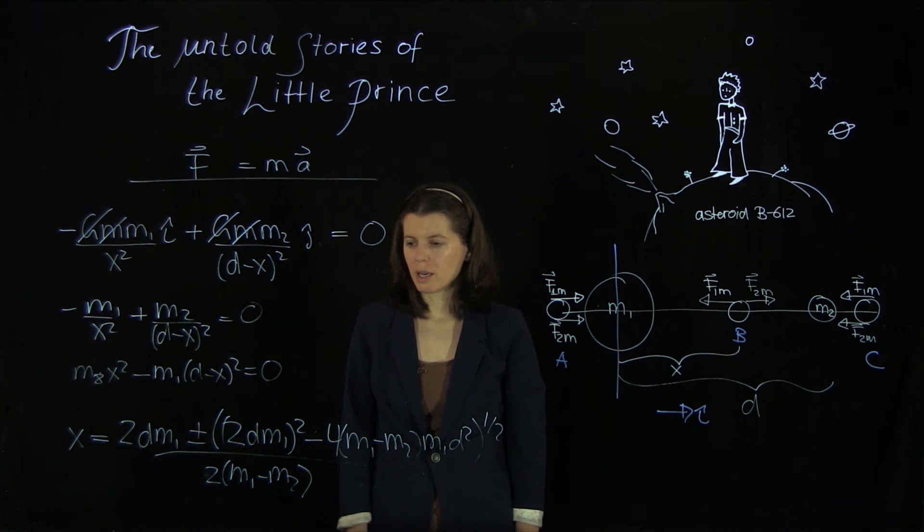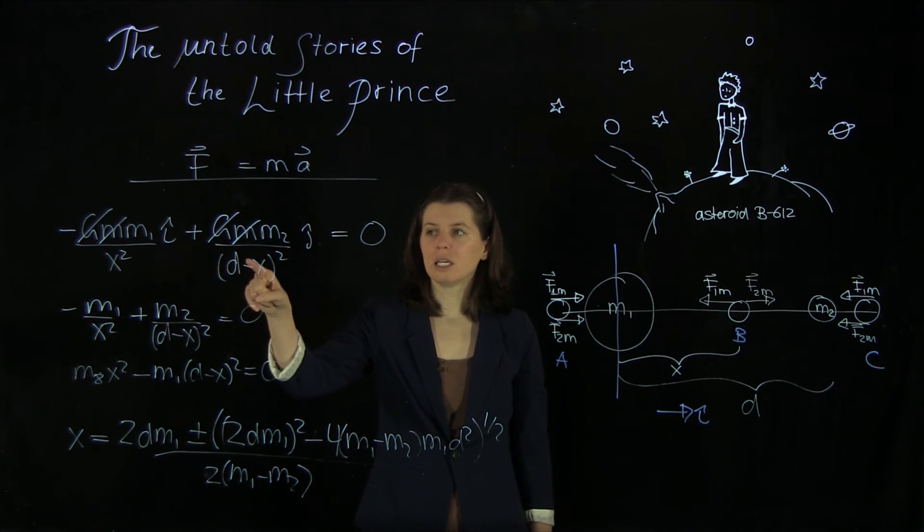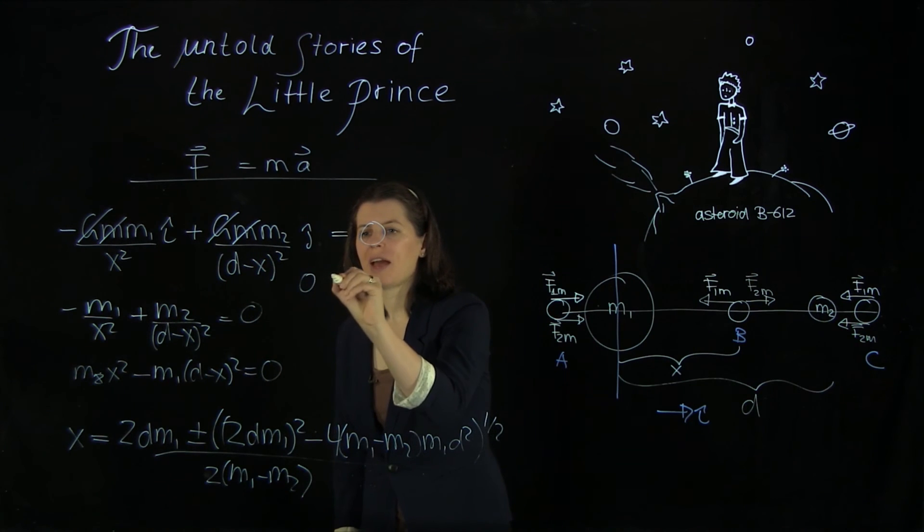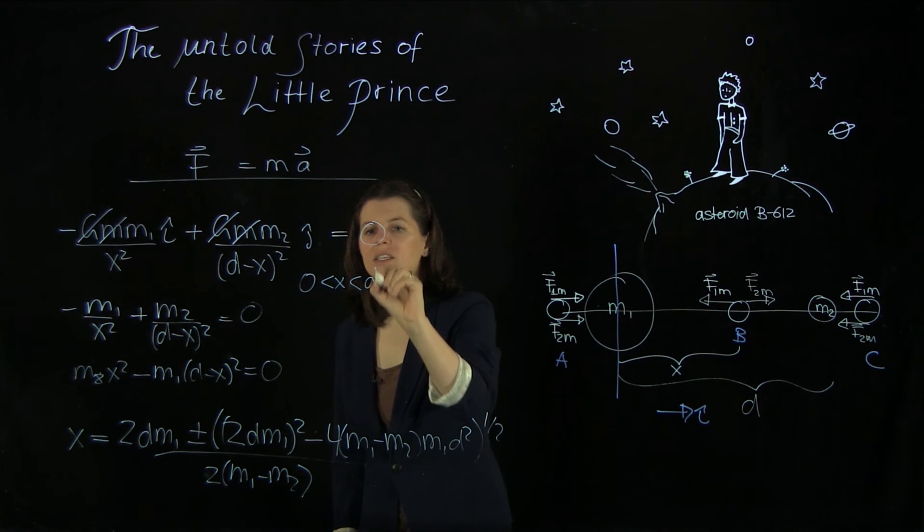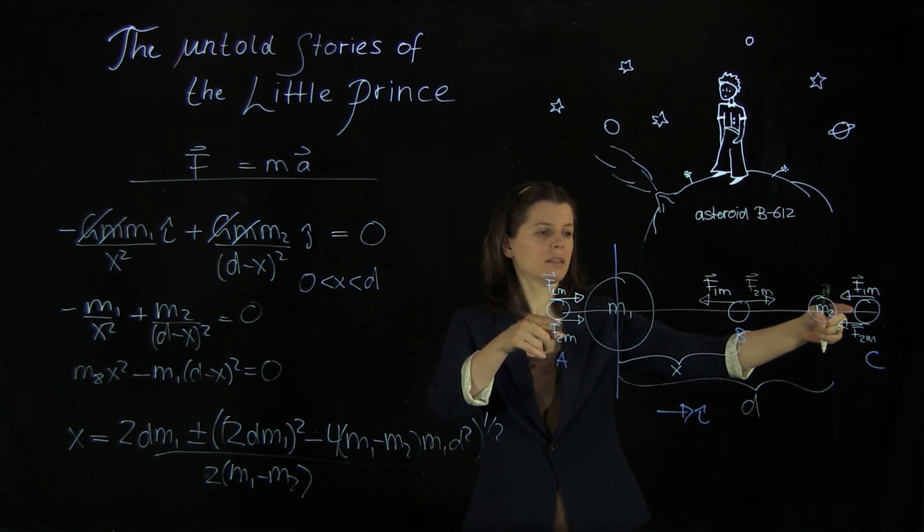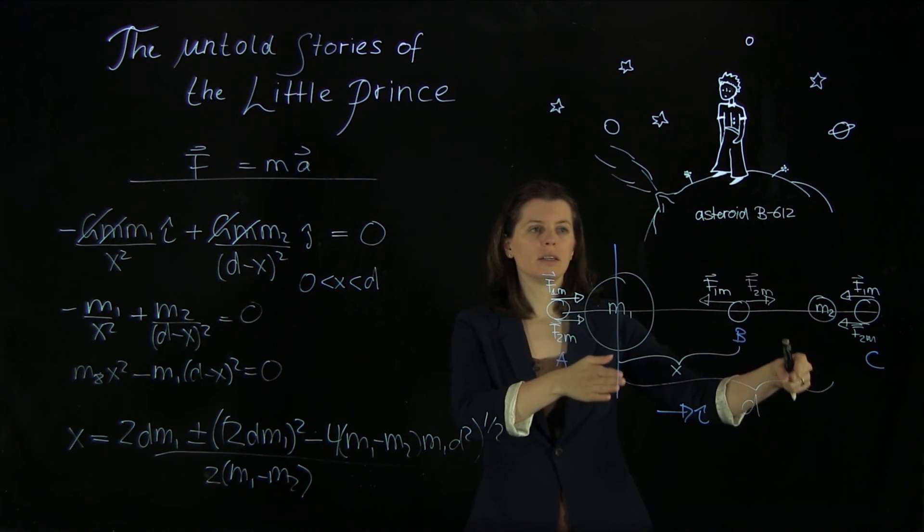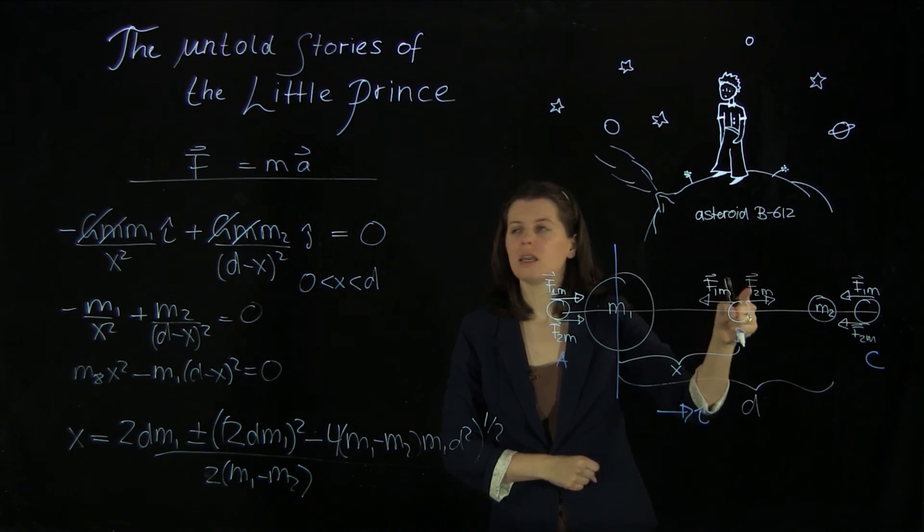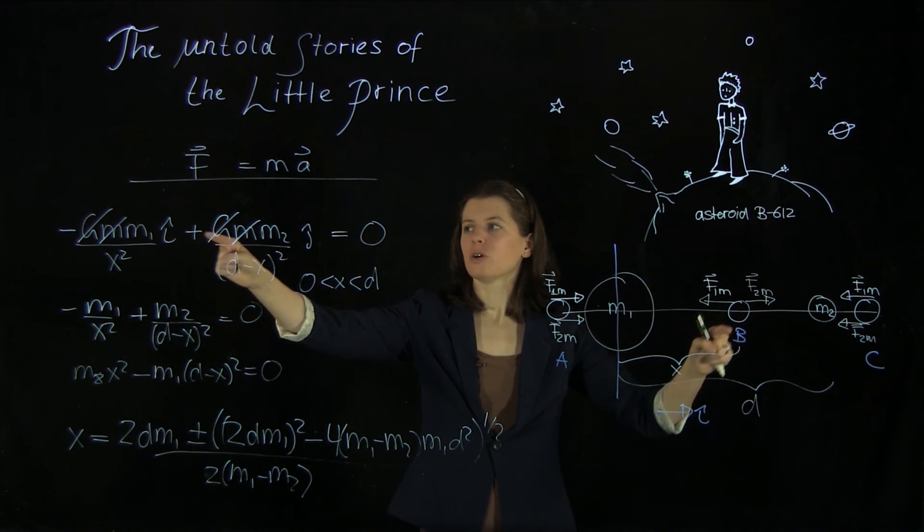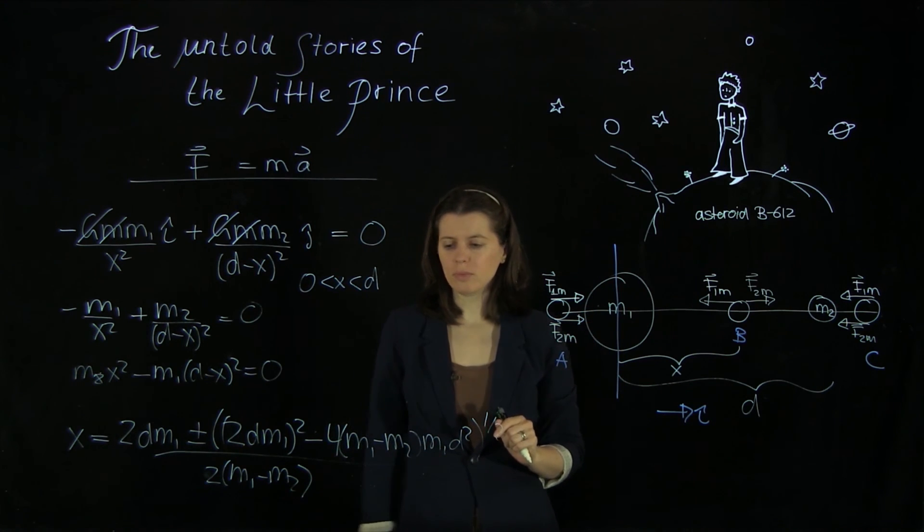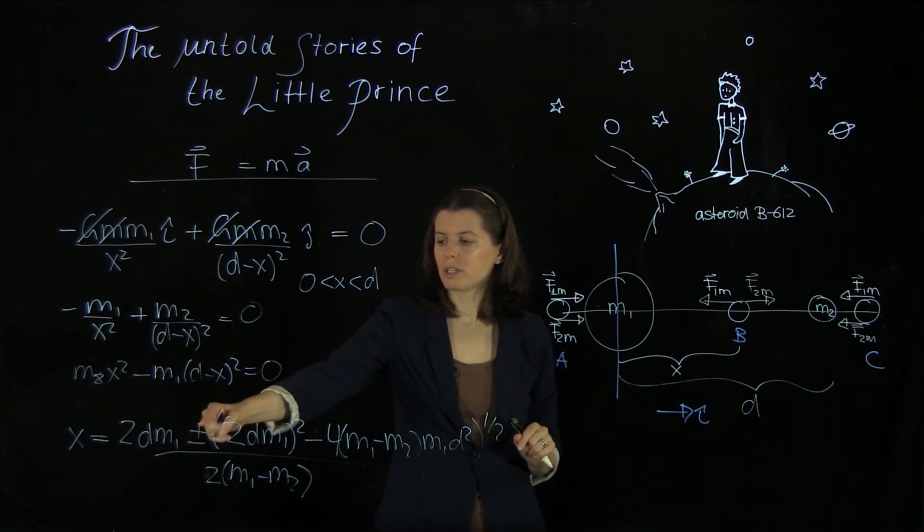And we now need to consider one more thing, namely this equation here is only valid if x is between zero and d, right? If I'm in position c, my x is larger than d, which means this force here flips sign. And then this would be different. So this plus here refers to x being less than d. And we have to decide which of the two signs here gives us the correct, which fulfills this requirement here.